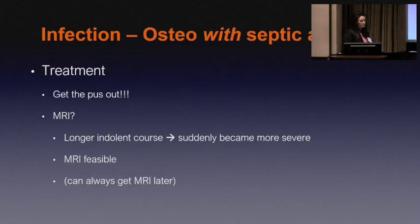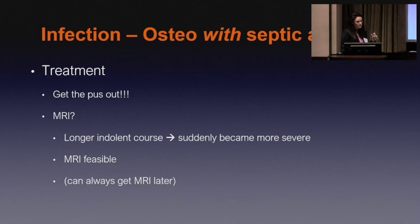The treatment is the exact same — get the pus out, do the antibiotics. The workup for osteomyelitis with a septic joint might push the MRI a bit more, particularly when the history is a longer, more indolent course that got acutely worse. We can always get the MRI later if need be. The first thing to do is treat the emergency.